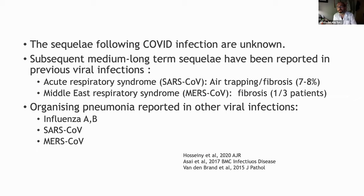But what do we know about potential sequelae following COVID infection? We don't know too much. It has been described that SARS and MERS could lead to fibrosis in some patients, but we don't have much information about the follow-up of these patients. There is also reported in other viral infections the presence of organizing pneumonia.